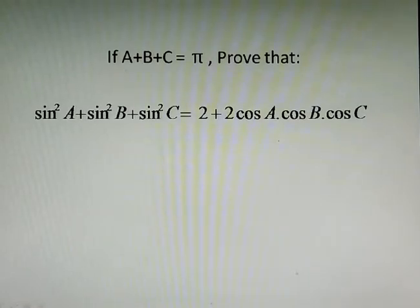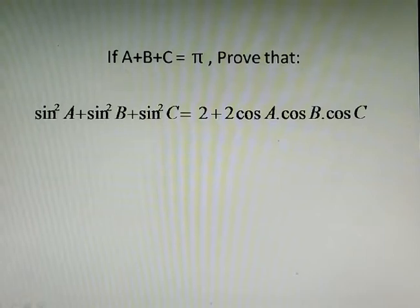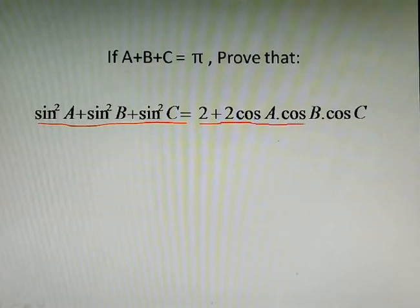Hello everybody, this is probably the 11th video on trigonometry. In this video I will be explaining a unique question. At the end of this video I'm quite sure your confusion will get completely clear. Today's question is on the screen: on the left side it is sin²a + sin²b + sin²c, and on the right side we have 2 + 2cosA·cosB·cosC.